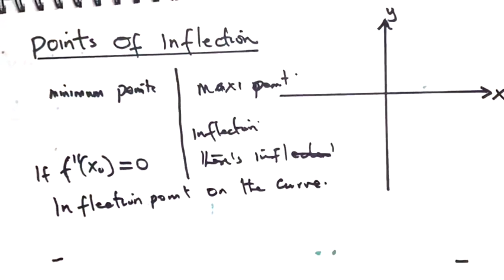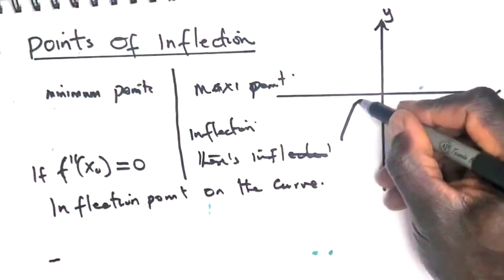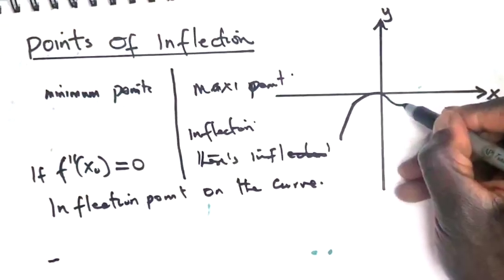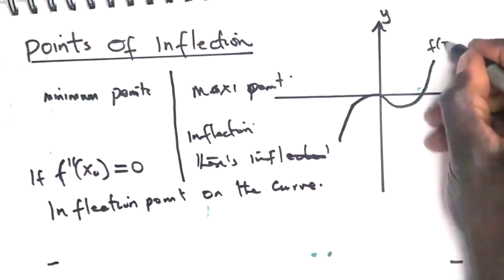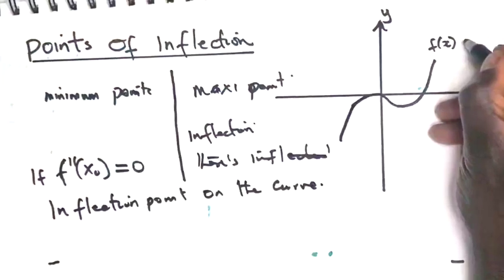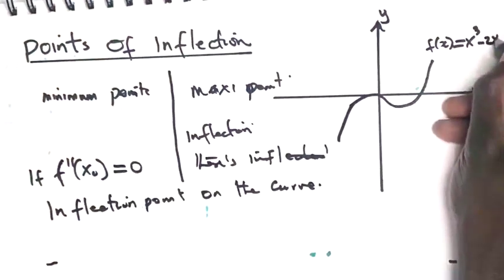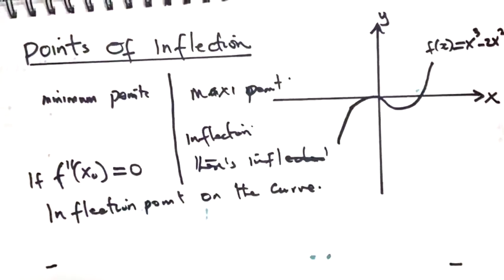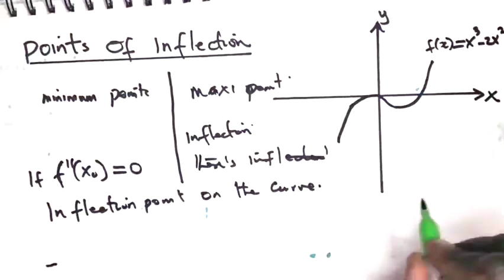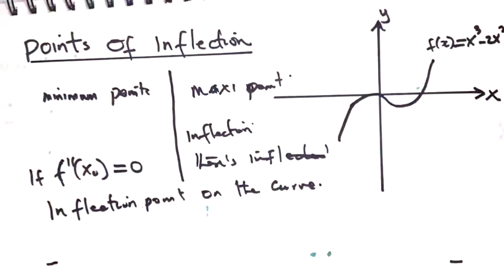So let's see an example. Let's say we have a function that goes like so. Let's say this function is f of x equals x cubed minus x squared. Let's find out if this one is really an inflection point.